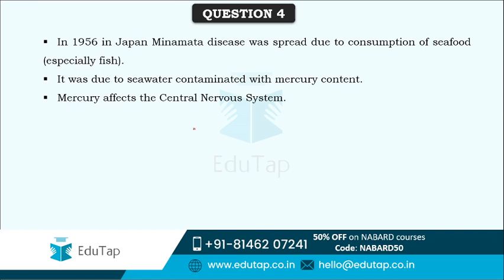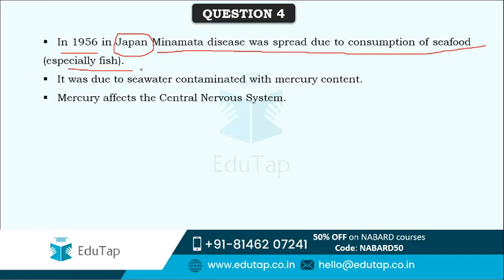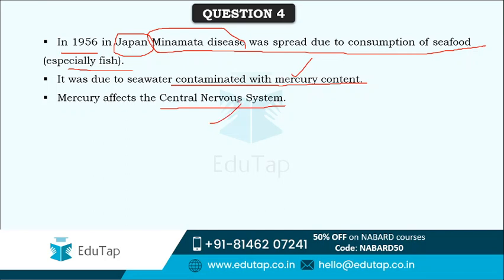Minamata disease is related to Japan. In 1956 in Japan, Minamata disease spread due to consumption of seafood, especially sea fishes, because the seawater near Japan was contaminated with mercury. When fishes were raised through this water and consumed by people, Minamata disease spread. Mercury affects the central nervous system of humans, so Minamata disease affects the central nervous system.